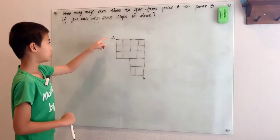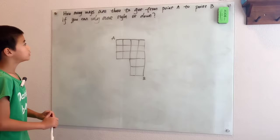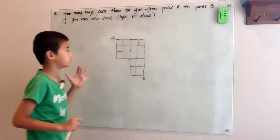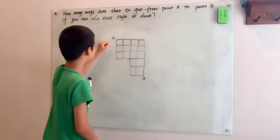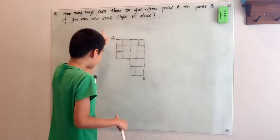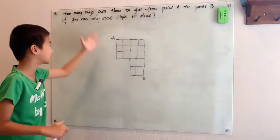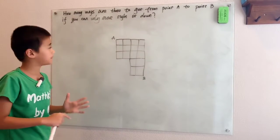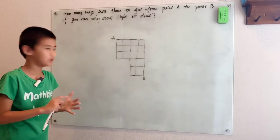How many ways are there to get from point A to point B if you can only move right or down? Now the point of this problem isn't to get you to try to count every single way, like actually count how many ways there are. But they want you to find a slicker way to do this.